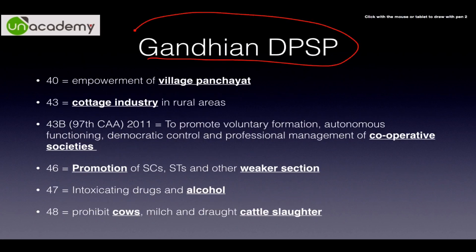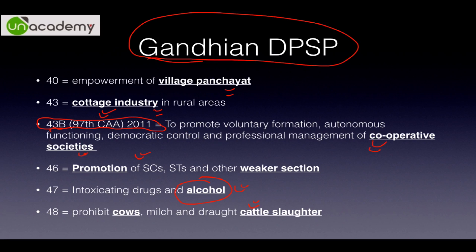Then we have Gandhian directive principles. The six keywords are: village panchayat, cottage industry, promotion of weaker sections, prevention of alcohol and intoxicating drugs, prohibiting cattle slaughter, and cooperative societies. The sixth one — cooperative societies — was introduced by Article 43B via the 97th Constitutional Amendment Act of 2011. It deals with democratic formation, voluntary formation, democratic functioning, and professional management of cooperatives. It also deals with your fundamental right of formation of cooperatives. Wherever you see these six keywords, it is a Gandhian DPSP.